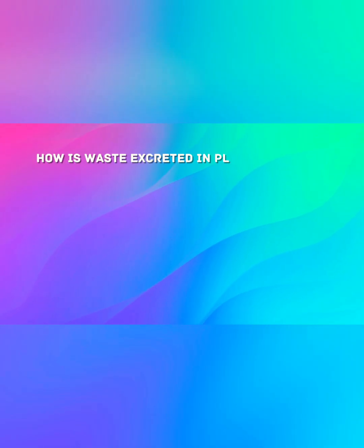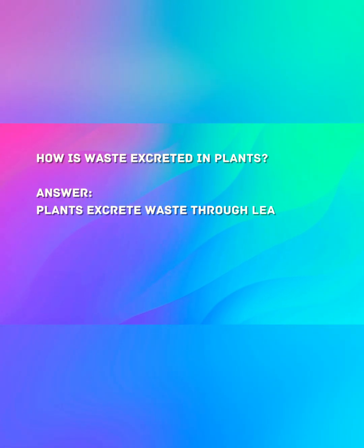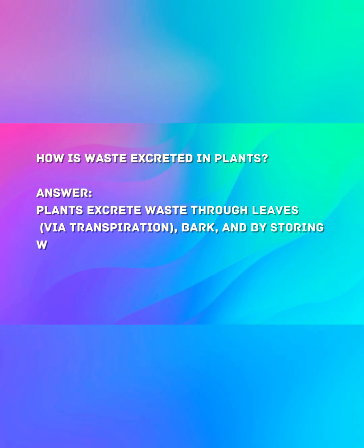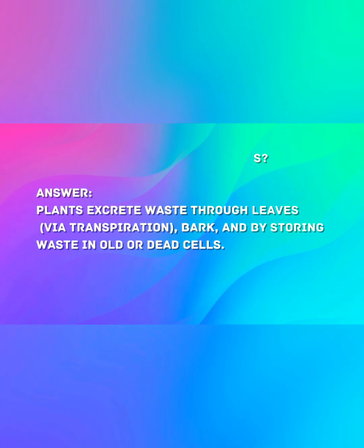How is waste excreted in plants? Plants excrete waste through leaves via transpiration, through bark, and by storing waste in old or dead cells.